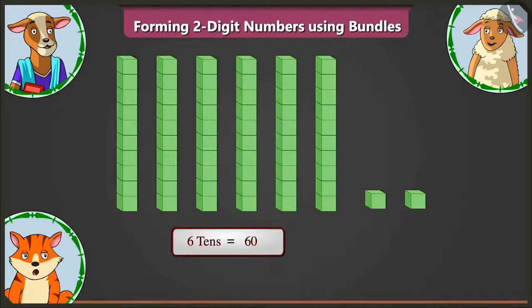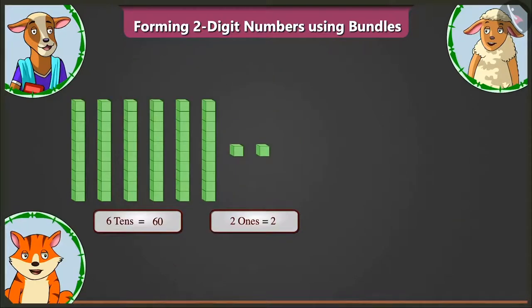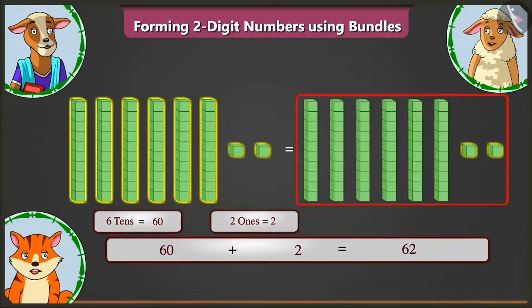Now, there are two small blocks which means there are two ones. Very good. Now, adding two to sixty, here we have sixty and two, giving us number sixty-two.